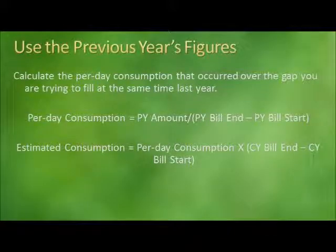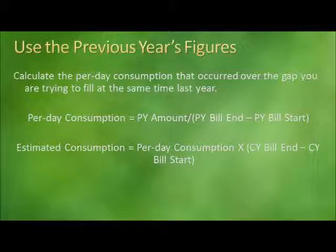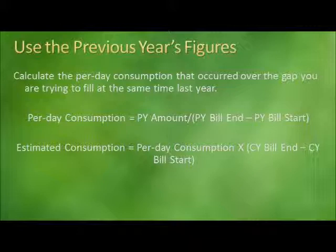The first method of estimation involves using the previous year's figures — calculating the per-day consumption for that source activity at that facility over the same time period last year. The two formulas involved are: first, to calculate the historical per-day consumption, take the previous year's amount and divide it by the bill's end date minus the bill's start date. Then, to estimate the consumption, multiply the per-day consumption by the current bill's end date minus the current bill's start date. Let's look at a specific example.